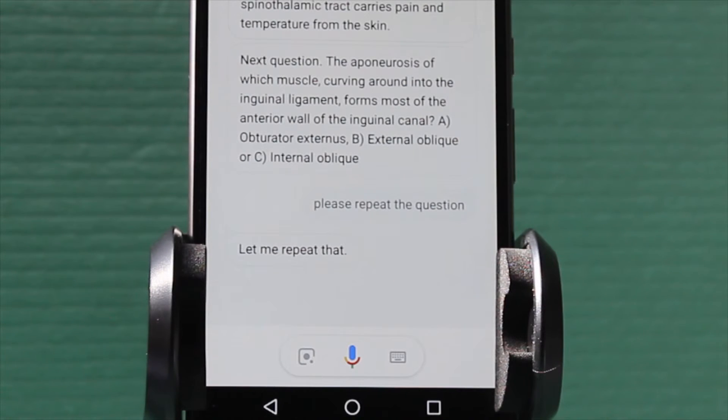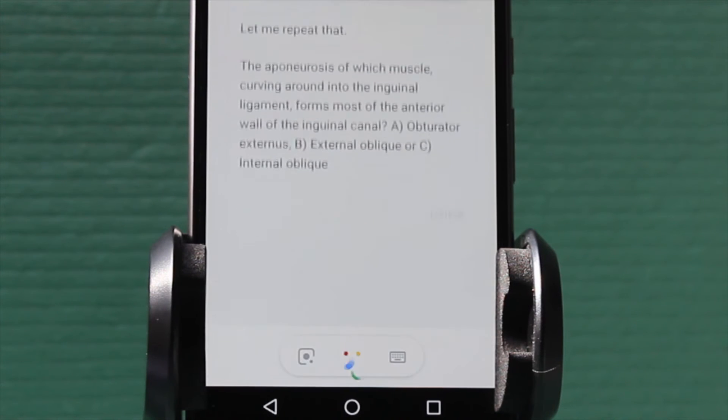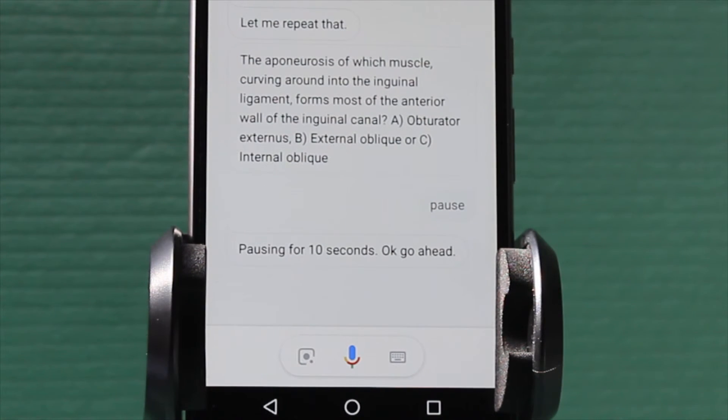Let me repeat that. The aponeurosis of which muscle, curving around into the inguinal ligament, forms most of the anterior wall of the inguinal canal? A) Obturator externus, B) External oblique, or C) Internal oblique. Pausing for 10 seconds. OK, go ahead.